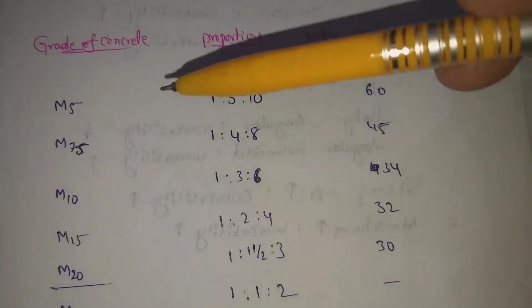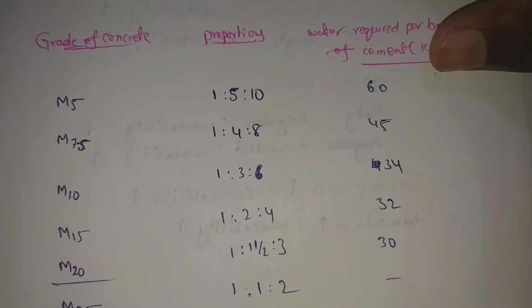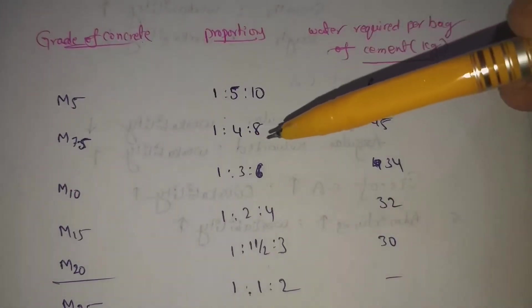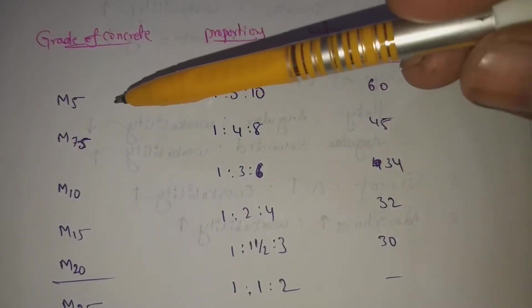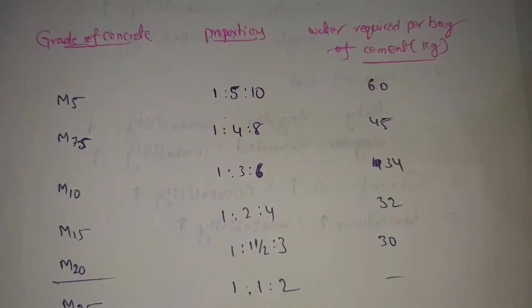Next, M7.5. M7.5 is 1 is to 4 is to 8, 45 liters required. M5 and M7.5 are used for lean mix. The footings are present in front of the bed. This lean mix is placed in front of the bed.